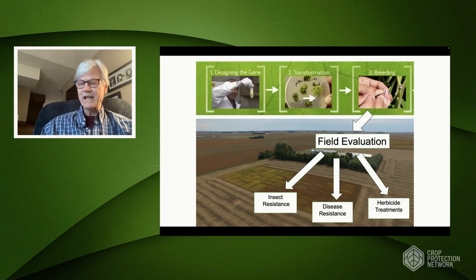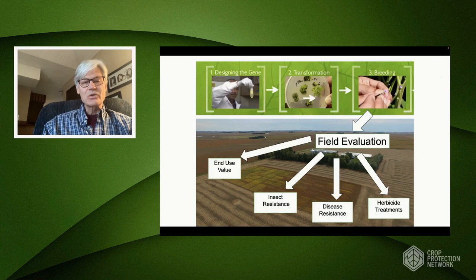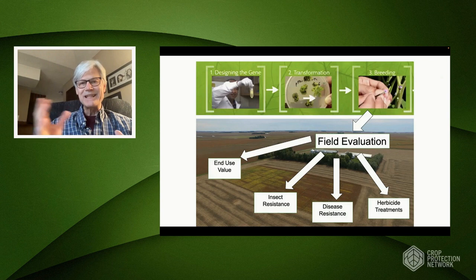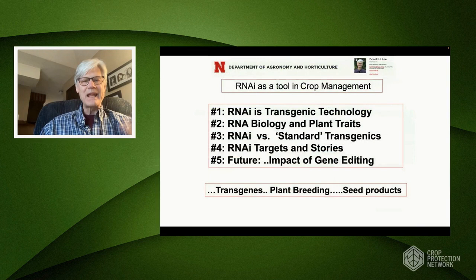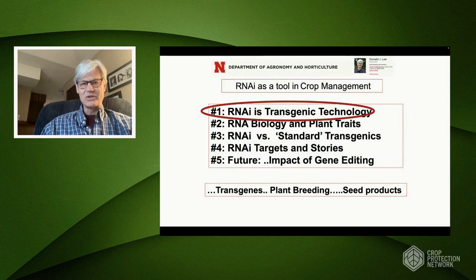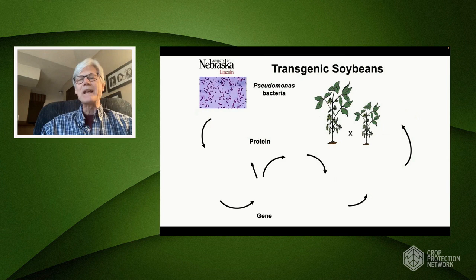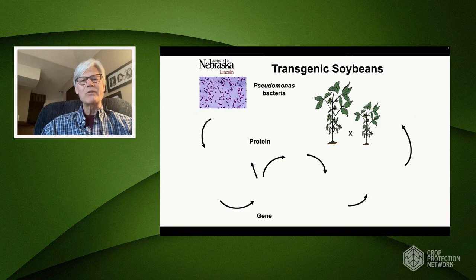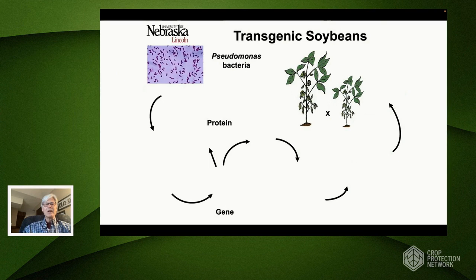Whether it be insect resistance or disease resistance, we'll talk about how RNAi could be used as a potential new kind of pesticide treatment and how it's being used in products to control end-use value. You don't get to the final product until you complete the entirety of this process from science discovery to technology evaluation. So RNAi is transgenic technology. Let's use the transfer of a trait from a bacteria, Pseudomonas, to soybeans as our example.